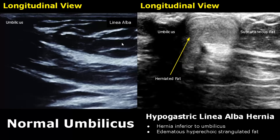A hypogastric linea alba hernia is found just below the umbilicus. In this image there is hyperechoic edematous fat, so it is a strangulated hernia. We can also see a narrow neck of the hernia sac.